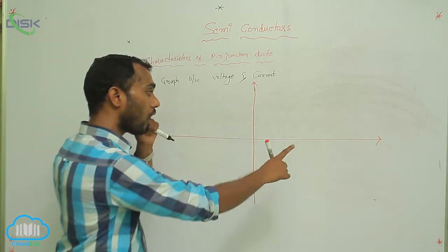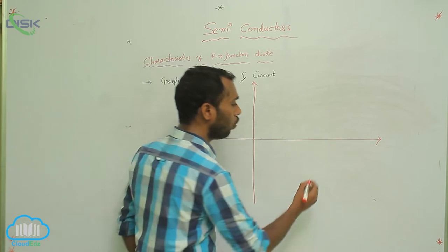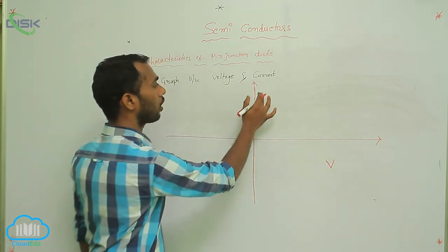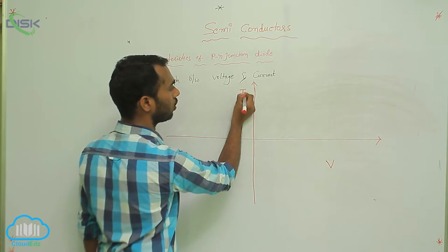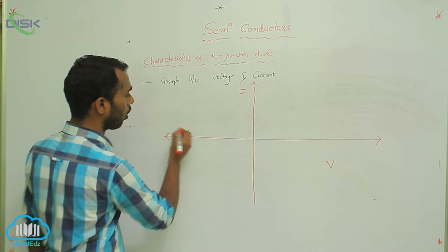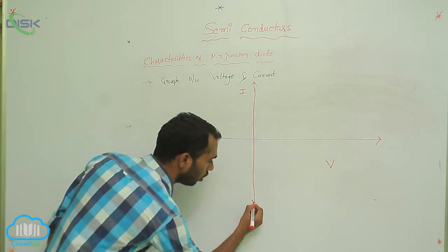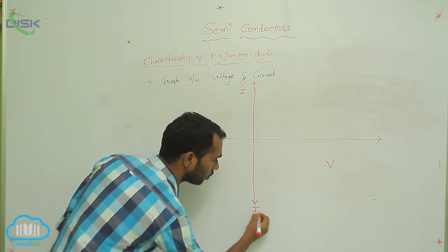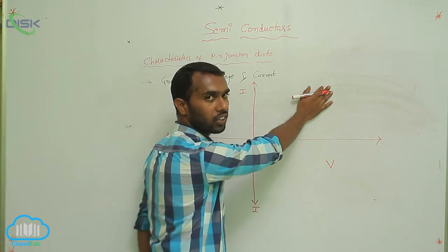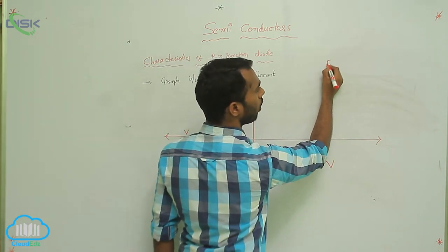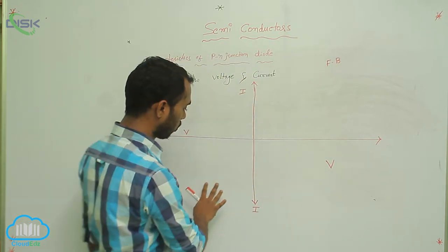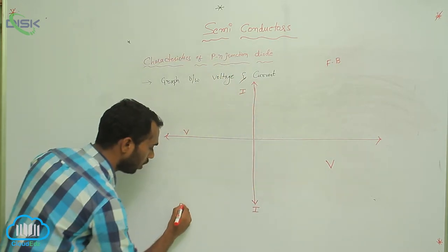On the x-axis I am taking voltage, and current on the y-axis. I am drawing the graph for forward bias on this part, and for reverse bias I am drawing here on the other side.